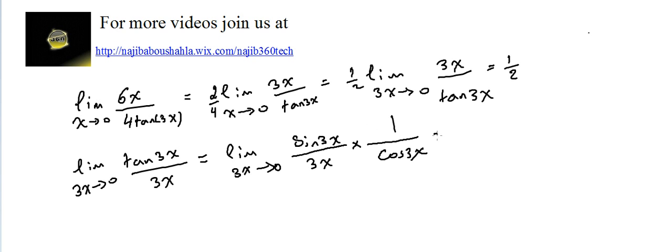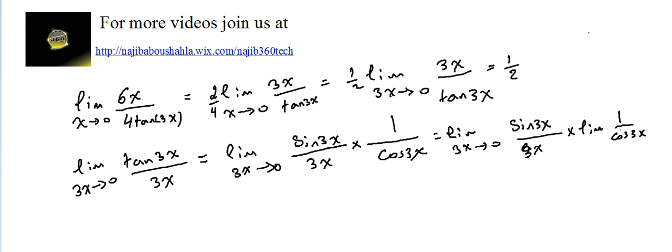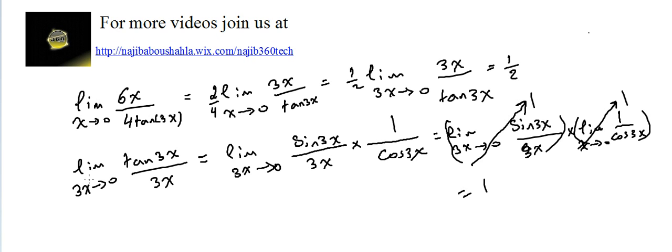As 3x approaches 0, this equals the limit of sine(3x) over 3x, times the limit of 1 over cosine(3x). Since cosine(0) = 1, that second factor goes to 1. And the limit of sine(3x) over 3x as 3x approaches 0 equals 1 by the rule we have. So the limit of tangent(3x) over 3x equals 1 — meaning we can directly use: limit of tangent(u) over u as u approaches 0 is 1. The reciprocal of 1 is also 1, multiplied by one-half gives the answer: one-half.